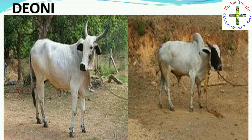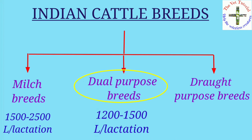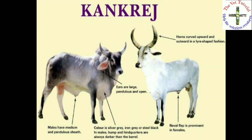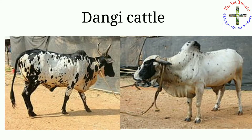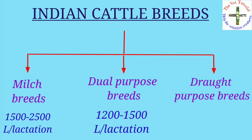Deoni can also be considered a dual purpose breed. In the dual purpose breed category, animals have characteristics intermediate between milch and drought breeds, and milk yield varies from 1200 to 1500 liters per lactation. The cows under this category are Haryana, Ongole, Kankrej, Tharparkar, Nimari, Dangi, Mewati, and Rathi.